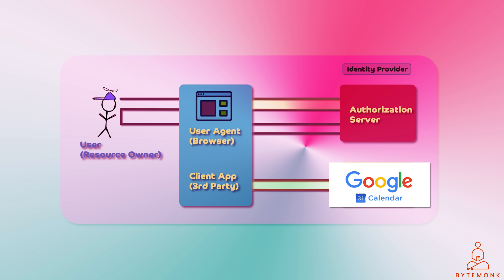The authorization server is responsible for issuing access tokens, and the identity provider is responsible for authenticating users. In some OAuth 2.0 flows these roles can be combined into a single entity, but in other cases they may be separate entities.